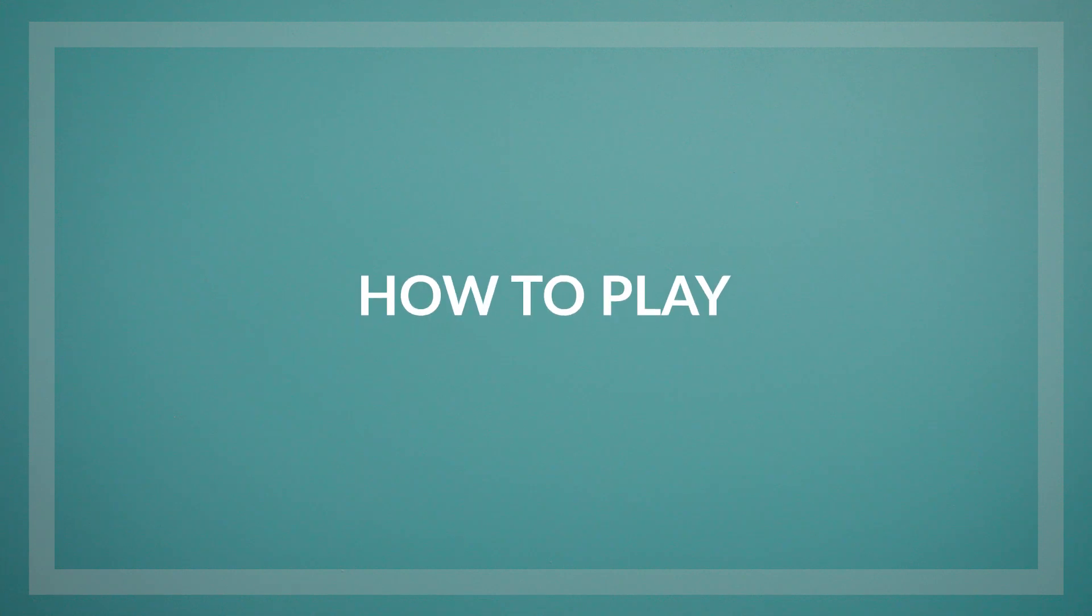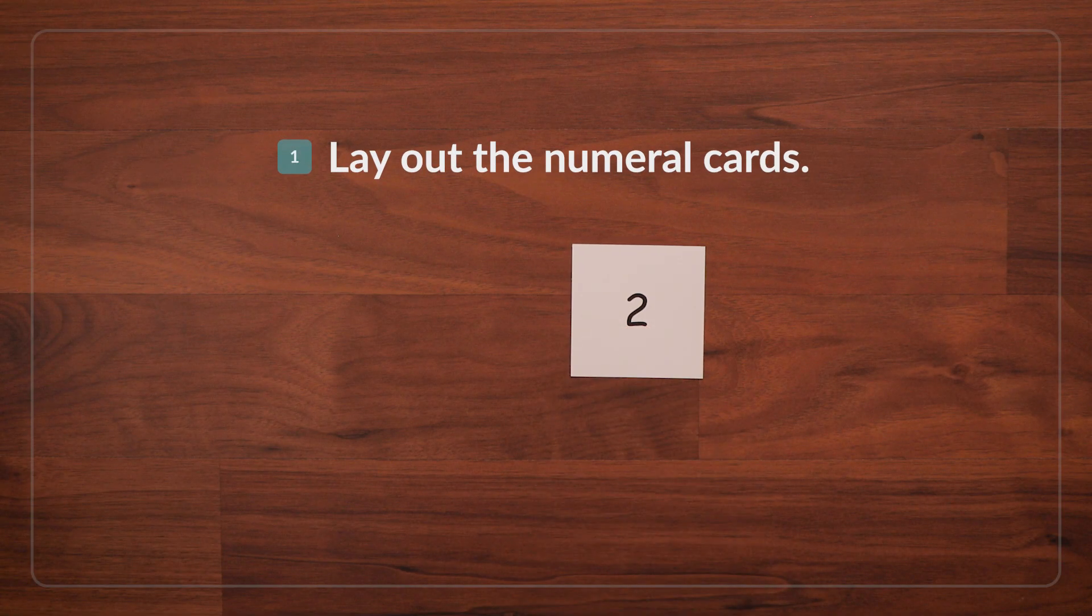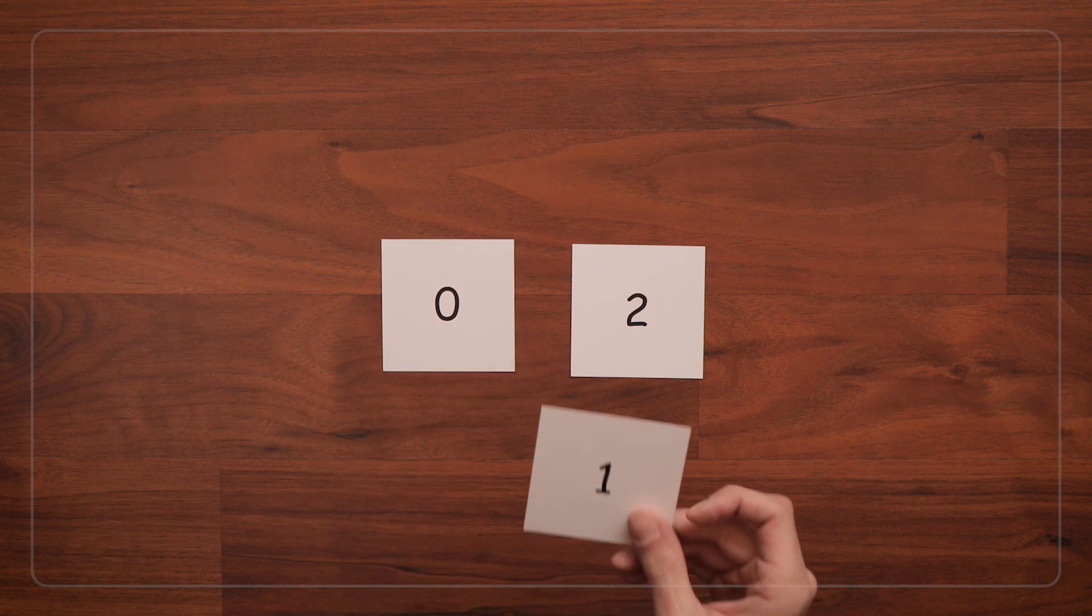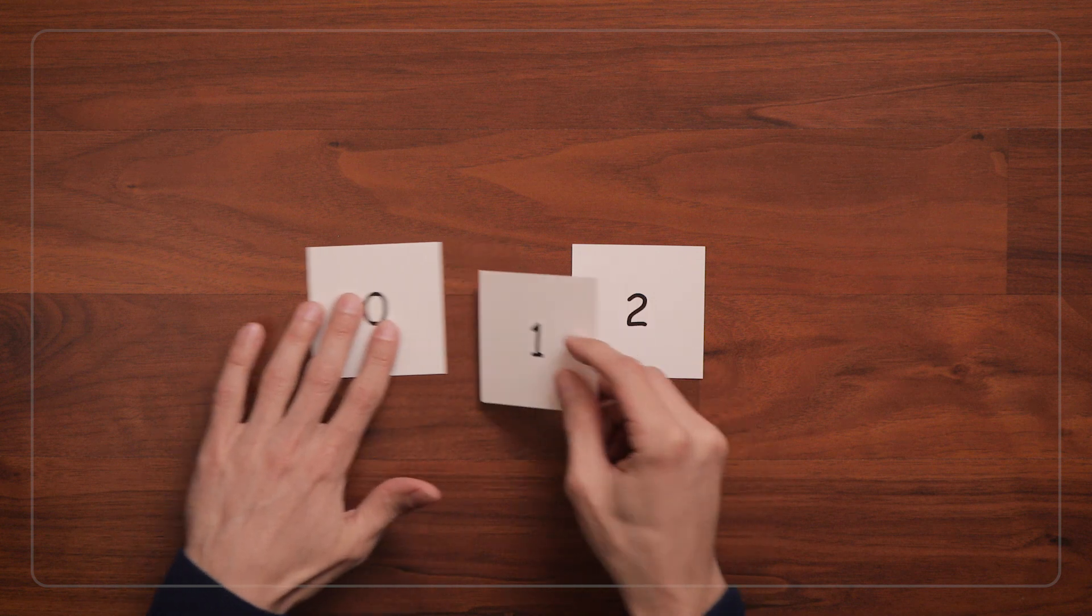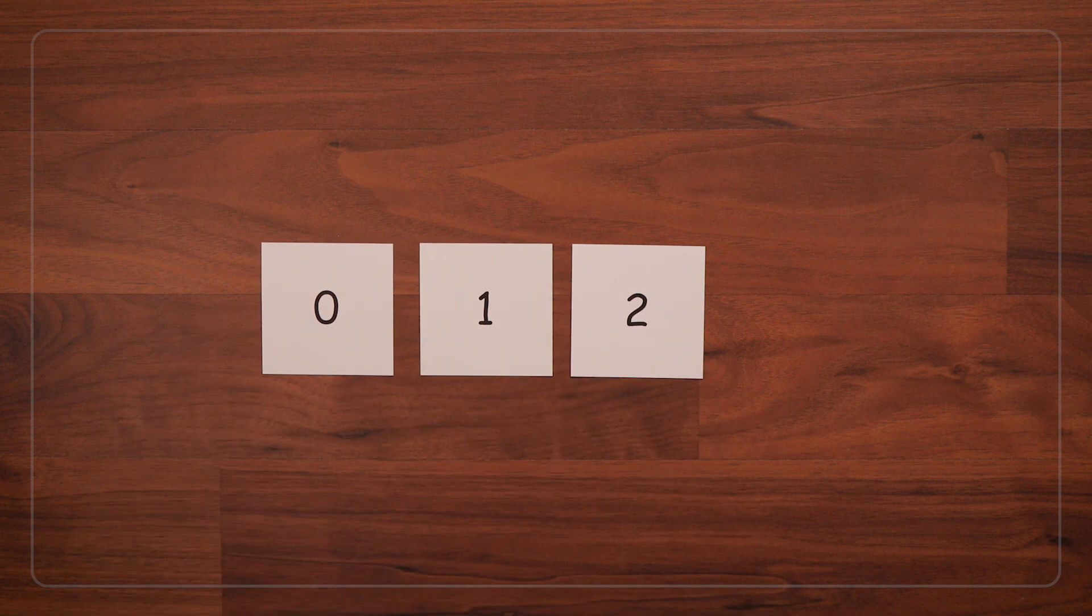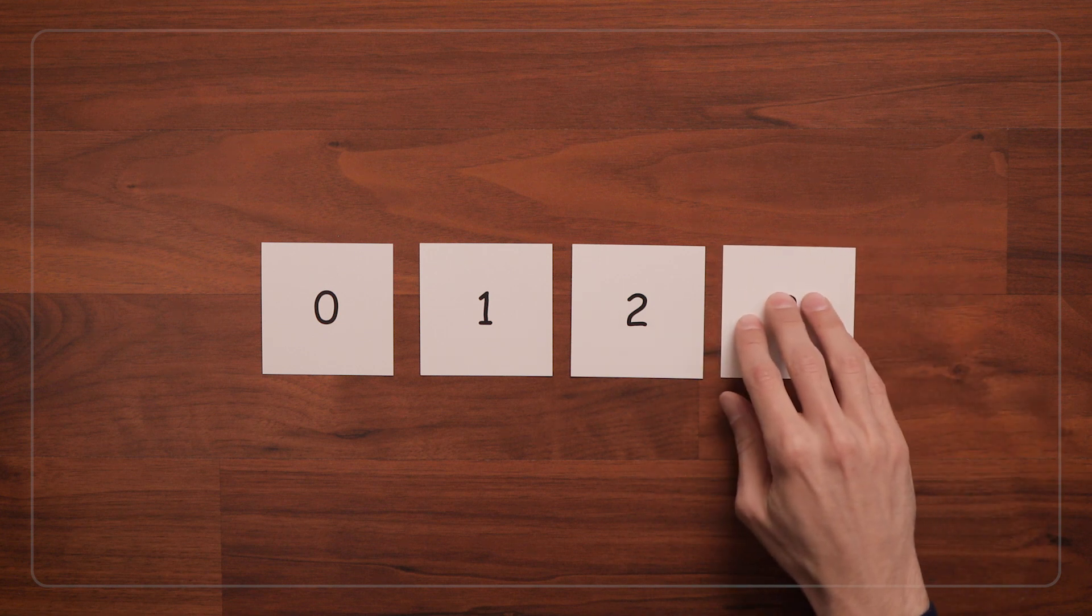To play Hungry Numbers, first, lay out the numeral cards in order. You can have children organize the cards, or you can do it to start. When watching children arrange the cards, notice if they recognize the numerals and if they know the order the cards go in. Give them time to figure it out before you jump in to help.